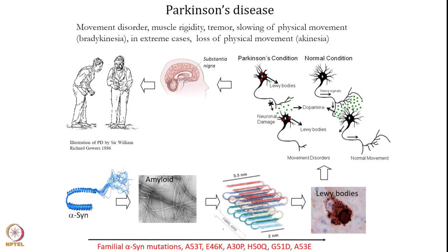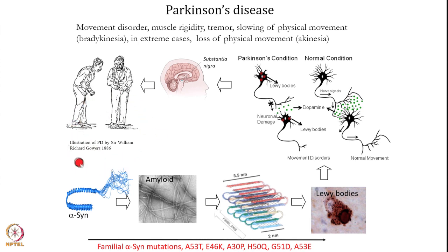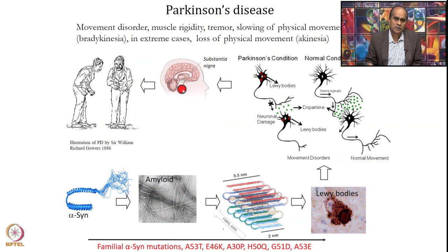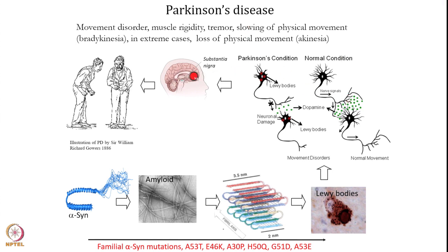Today I am going to focus on one protein which is alpha-synuclein. This aggregates and causes the second most common neurodegenerative disease, which is called Parkinson's disease. It was first investigated in 1986 and has clinical features like movement disorder, muscle rigidity, tremor, slowing of physical movement, and in extreme cases loss of physical movement. In this disease, proteins get aggregated in the neurons of the brain in a region called substantia nigra, and because of aggregation, cellular communication gets impaired.